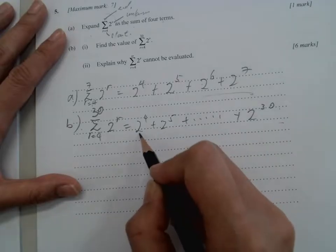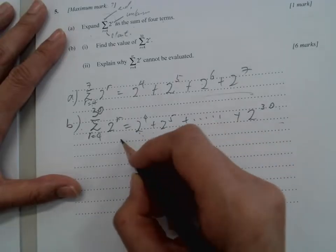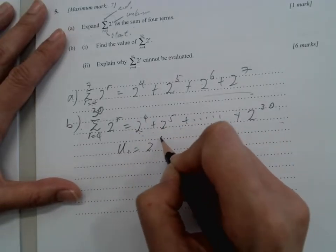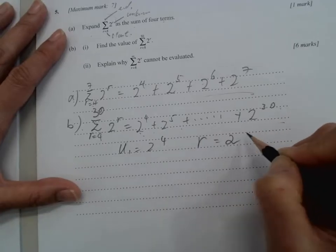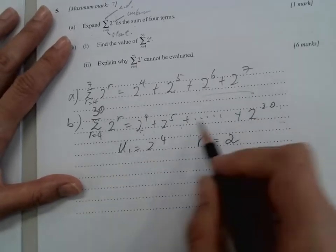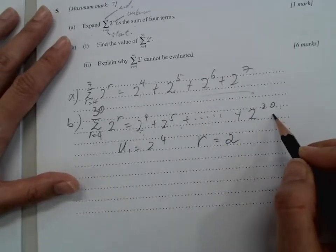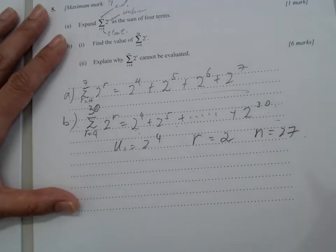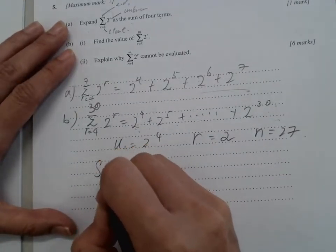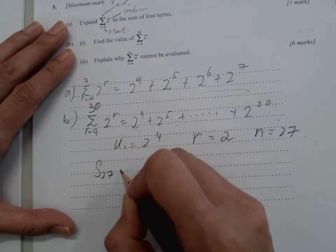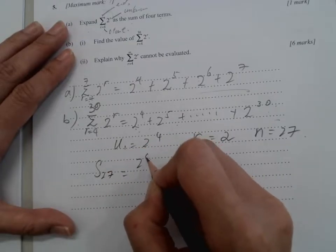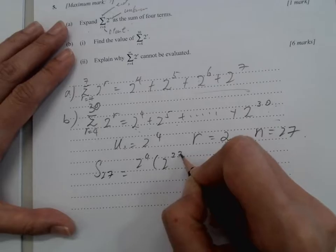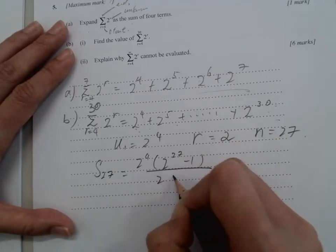What I can see, this is a sum of GP with u1 equals 2 to the power of 4 and r is 2. So from 2 to the power of 4 to 30, we got 26 terms. So n equals 27. We can use the sum of GP equals 1st term, 2 to the power of 27 minus 1, over 2 minus 1.